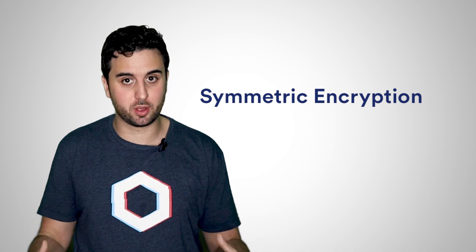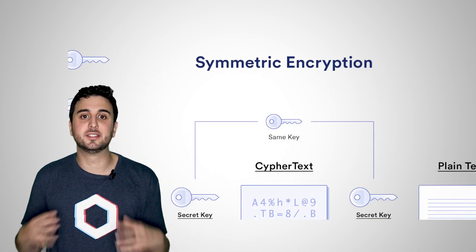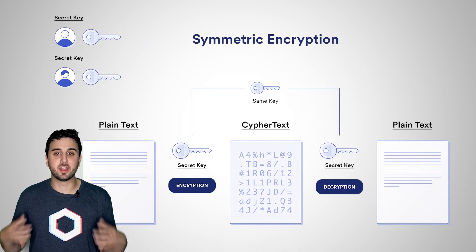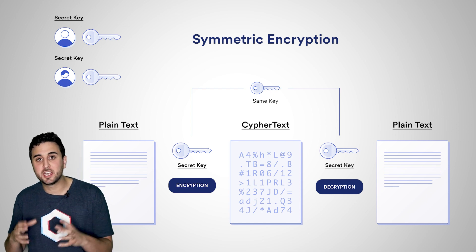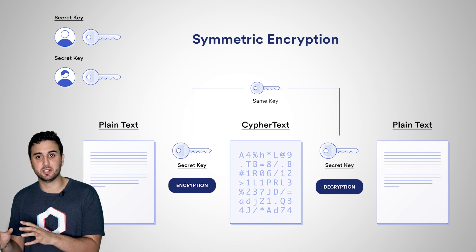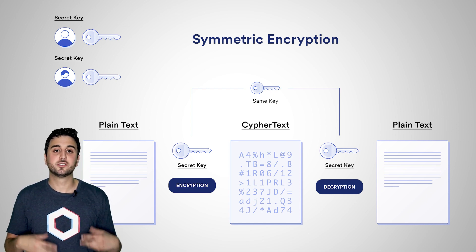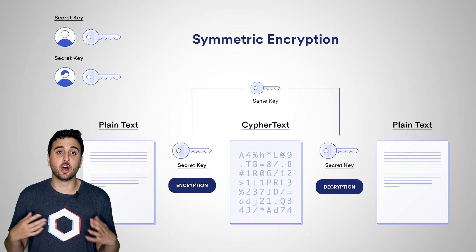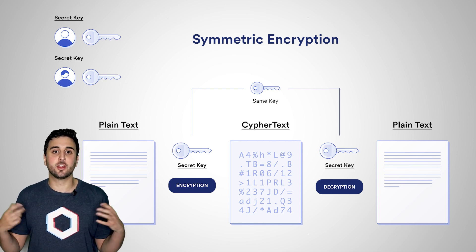In symmetric key protocols, all parties use the same key, called the secret key, for encryption and decryption of messages. Thus, symmetric key encryption is often called secret key encryption.